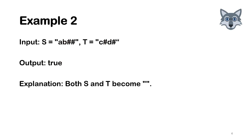Next example: what if you see double hashtags? That means you have to delete two letters. You see a double hashtag, you delete those two letters, and it becomes an empty string — just like pressing backspace on a keyboard. The other string also becomes an empty string, so they're equal and you return true.